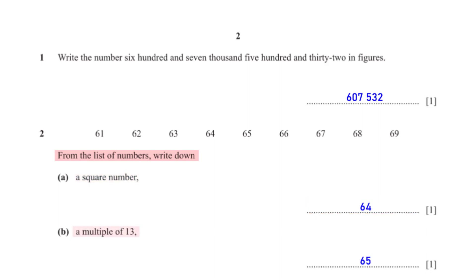Write down a multiple of 13. From the list, 65 is a multiple of 13. 13 times 5 gives us 65.